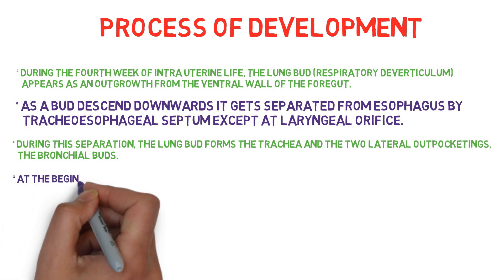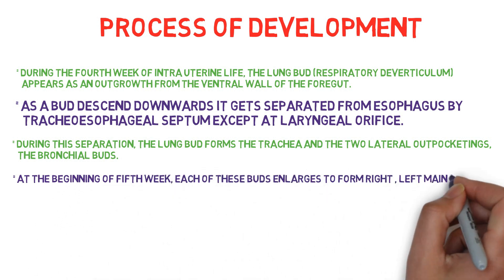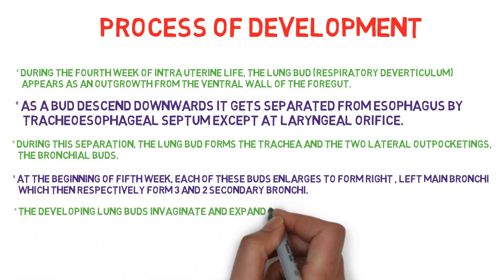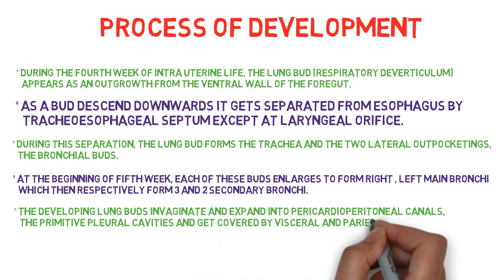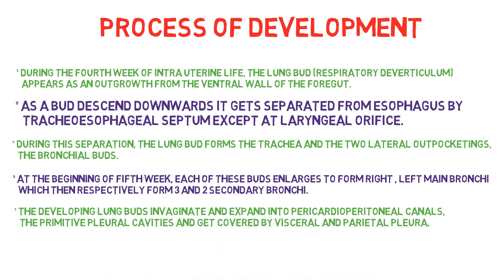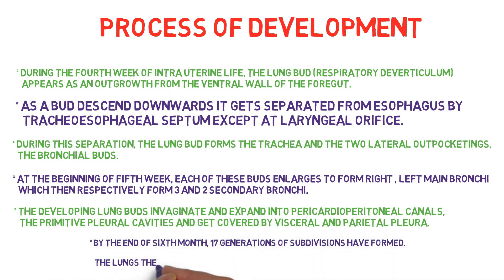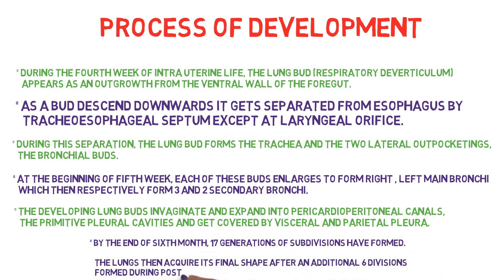At the beginning of the fifth week, each lung bud enlarges to form the right and left main bronchi, which respectively form three and two secondary bronchi. The developing lung bud invaginates and expands into the pericardioperitoneal canals — the primitive pleural cavities — and gets covered by visceral and parietal pleura. By the end of the sixth month, the 17th generation of subdivision has been formed, with the lung acquiring its final shape after an additional six divisions during postnatal life.